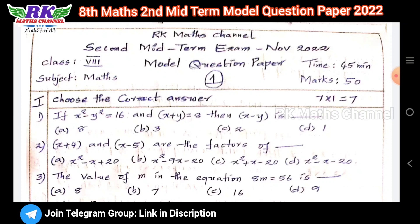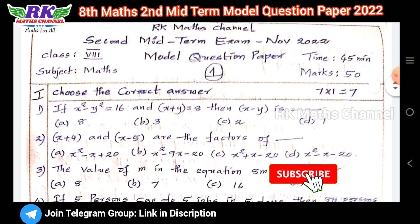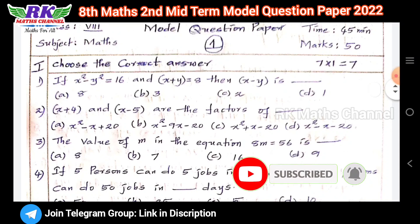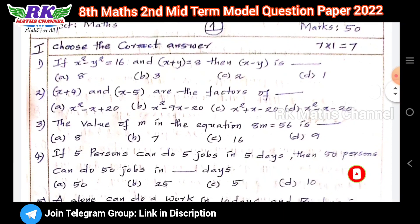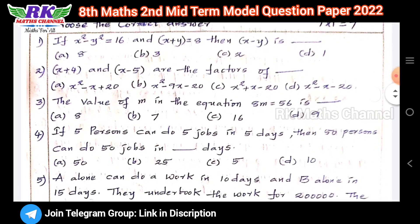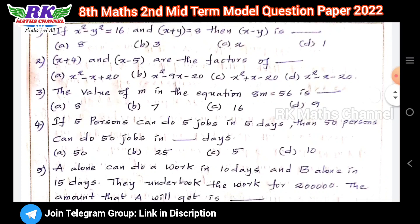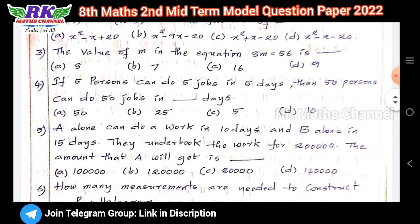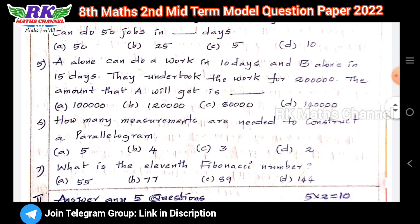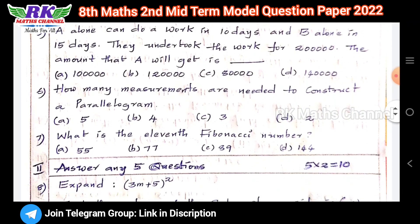The question paper is total 50 marks. The second mid-term exam is 15 marks. First section is 7 bits, 7 questions total.